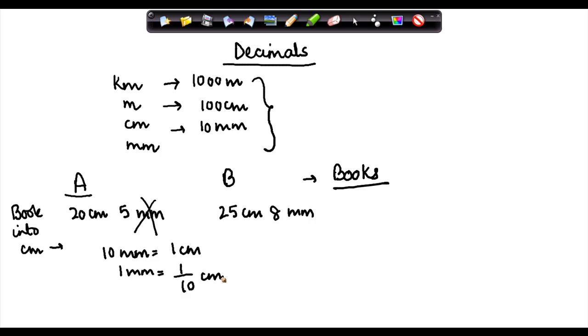Why? Because 10 millimeters make 1 centimeter. So obviously, 1 millimeter is going to be less than 1 centimeter. And to arrive at that number, I need to divide this 1 by 10. Now, if you divide this 1 by 10, what do you get? You get 0.1 centimeter. And how do you get it?